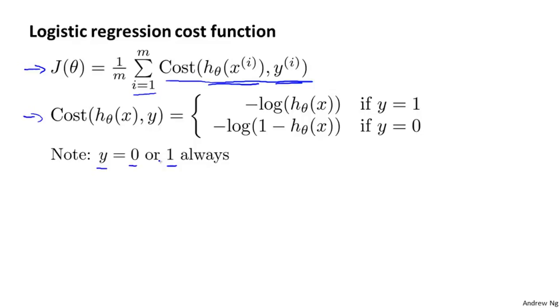Because y is either 0 or 1, we'll be able to come up with a simpler way to write this cost function. Rather than writing out this cost function on two separate lines with two separate cases for y equals 1 and y equals 0, I'm going to show you a way to take these two lines and compress them into one equation. This will make it more convenient to write out the cost function and derive gradient descent.